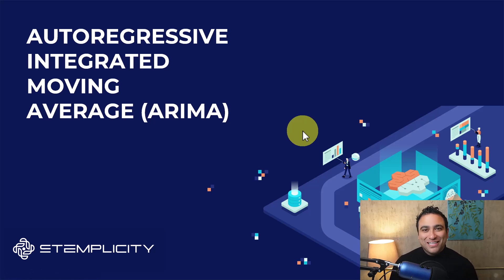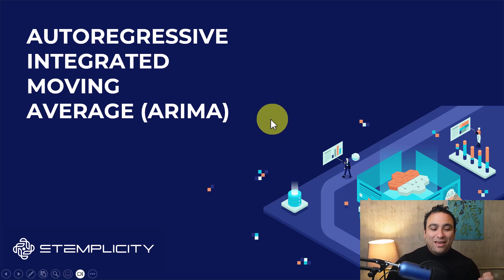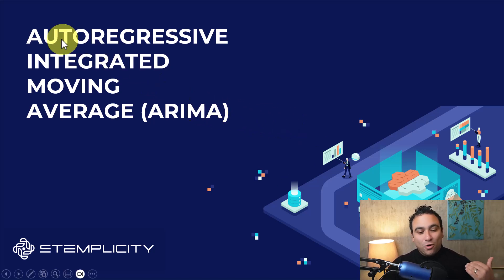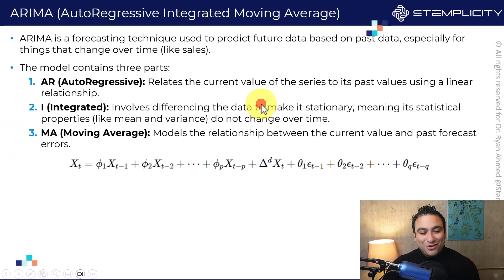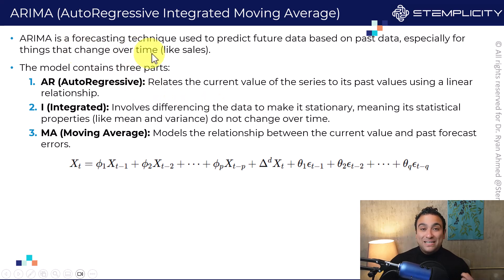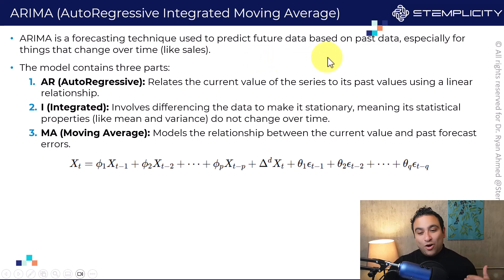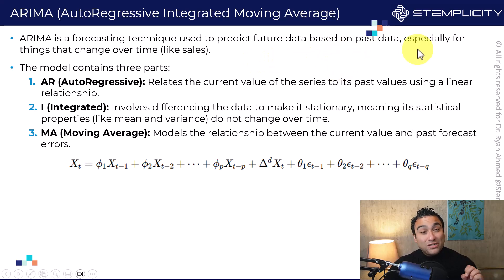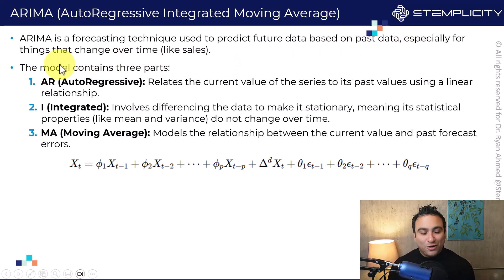Hello everyone and welcome to this lesson. In this lesson we are going to cover the ARIMA model. ARIMA stands for Autoregressive Integrated Moving Average. It is a forecasting technique used to predict future data based on past or historical data. It works really well for things that change over time, like sales for example.